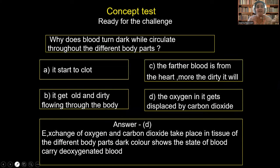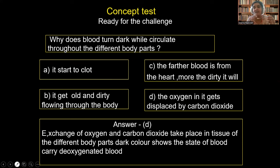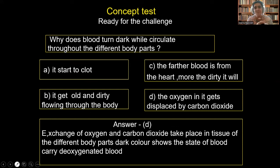Another question: why does the blood turn dark while circulating through different parts of the body? Mainly because when the blood is supplied to different parts, the oxygen in it gets displaced by carbon dioxide — the oxygen present in the blood will be replaced by carbon dioxide. It starts to clot? No — inside the body the blood must not clot. The farther from the heart the darker? No. The best option is: the oxygen in it gets displaced by carbon dioxide present in the tissues.